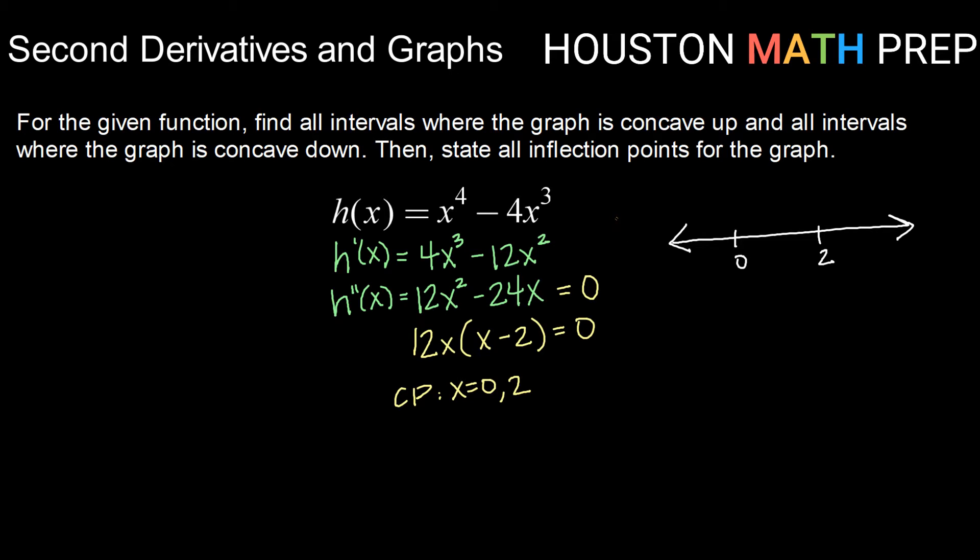And then we're going to test values into the second derivative and see for each interval if that second derivative is positive or negative. So if I take a value less than 0, let's say perhaps negative 2, then I'm looking at h double prime at negative 2. That would be 12 times negative 2 times negative 2 minus 2. Remember, I'm not worried about the value. I'm really only worried about the sign. So 12 times negative 2 would be a negative number, and negative 2 minus 2 would also be a negative number. So overall, that would be a positive quantity. So I'm just going to put a plus sign there.